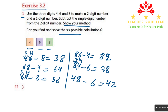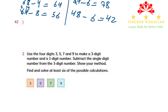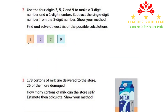We are done with the first question. In question 2, we are given 4 digits: 3, 5, 7, and 9. We are asked to make a three-digit number and a one-digit number, then subtract the one-digit number from the three-digit number, and show our work. It's asking us to find at least six possible calculations.